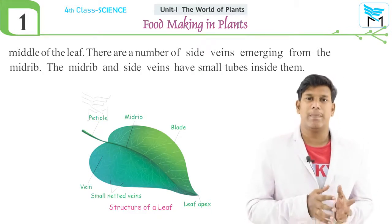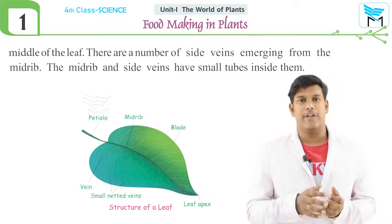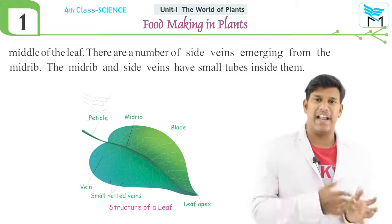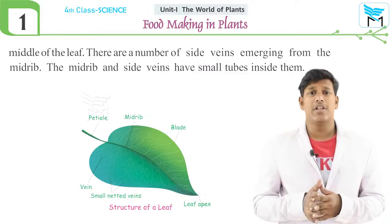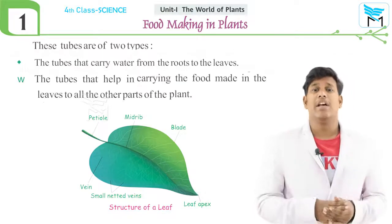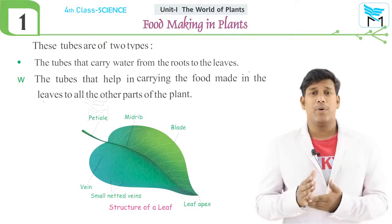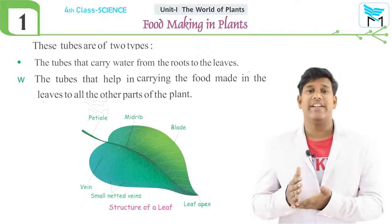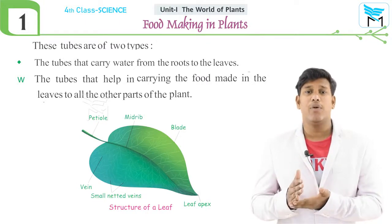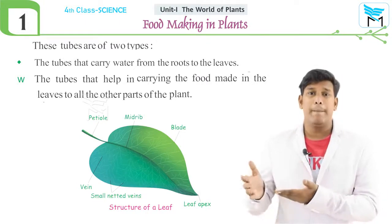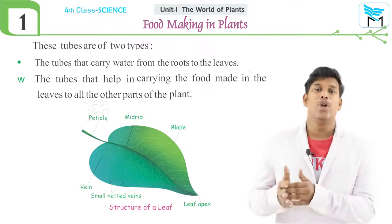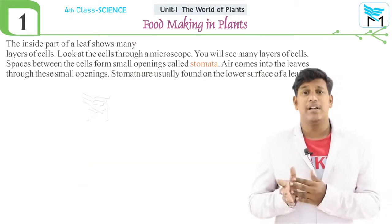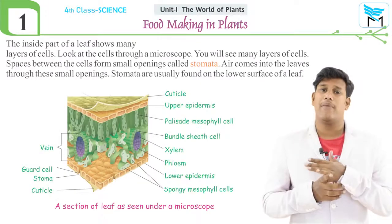These leaf veins are helpful to the plant to transfer food and bring water into the plant. These small tubules are of two different types: one type of tubule carries water to the leaf, and the other type of tubule carries prepared food from the leaf to all parts of the body.